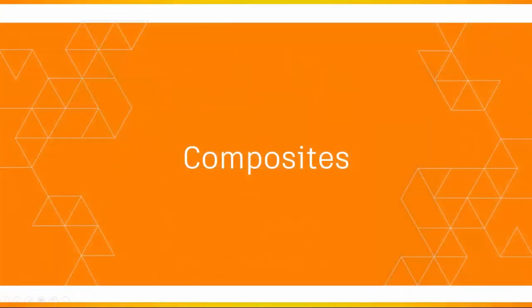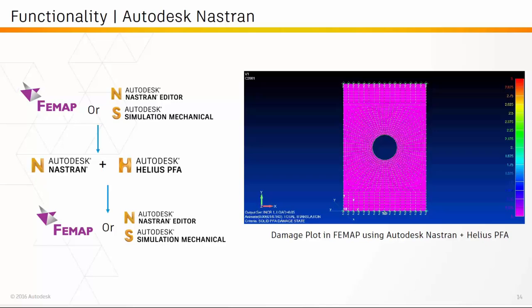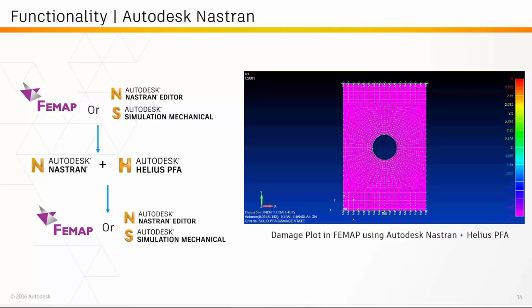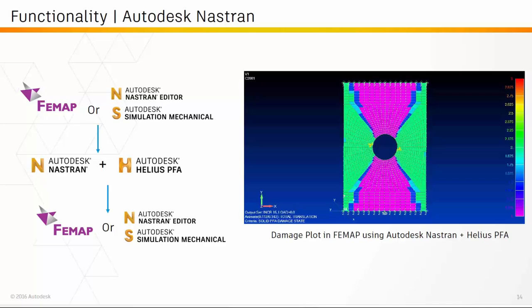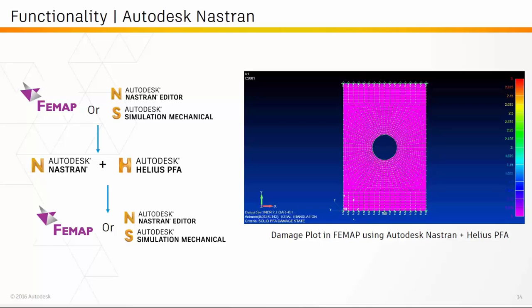Now let's take a look at what functionality we've added for composites workflows. Helios PFA is an add-on to Abaqus and ANSYS for structural simulation of composite materials as well as plastic materials. For composites, we've added new functionality specifically for continuous fiber composites. The first is support now for Autodesk Nastran, which can now leverage Helios PFA in the background to predict initiation and propagation of failure for continuous fiber composite materials.